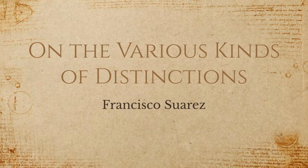Hello everyone, today we're going to be doing On the Various Kinds of Distinctions by Francisco Suarez. This is a section of his treatise on unity because distinction is the correlate of unity. Wherever a kind of unity is lacking, a kind of distinction is there to be found.